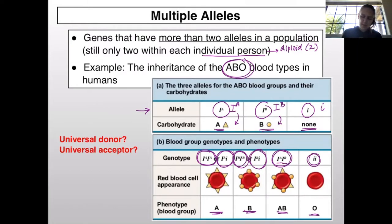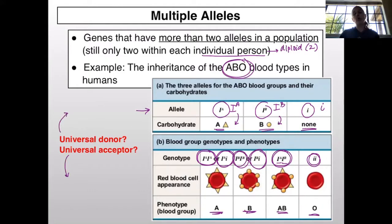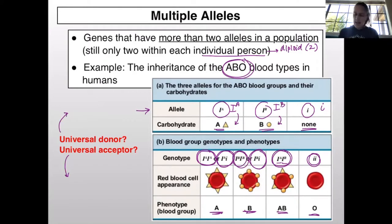Think about which blood type would be the universal acceptor and which would be the universal donor.